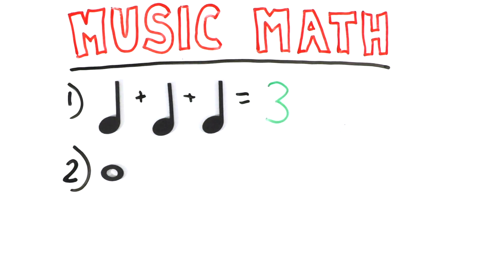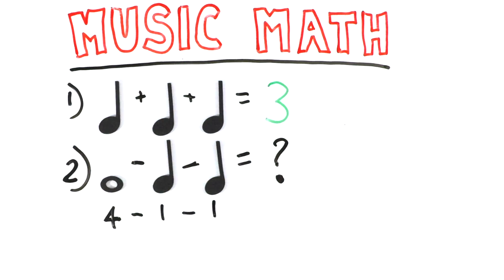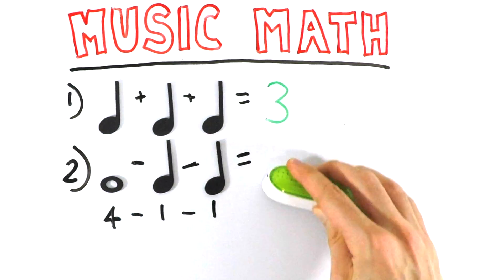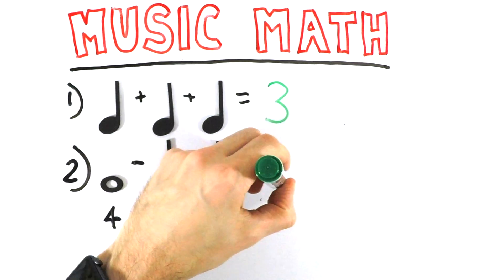So let's do another example. What if we did a whole note and subtracted a quarter note and another quarter note? You'd have to remember that the whole note is worth four beats and the quarter notes are worth one beat each. So you basically have a simple math equation where it becomes four minus one minus one. And your final answer would be two beats.